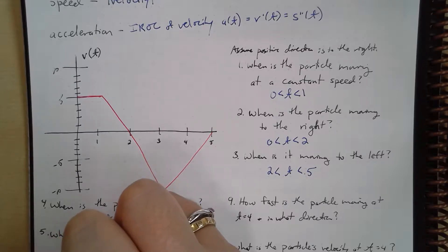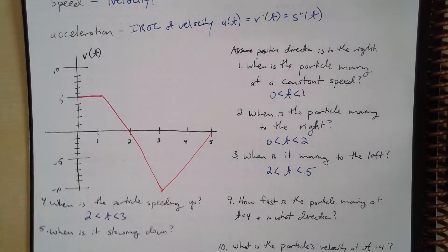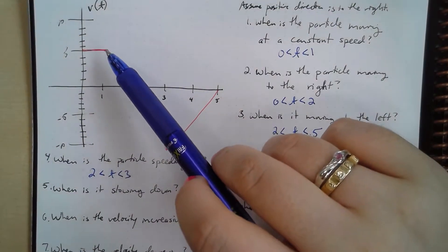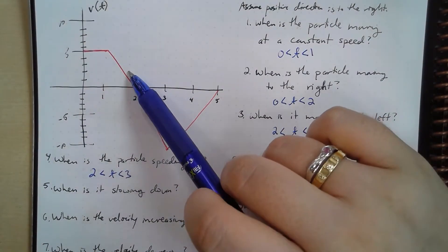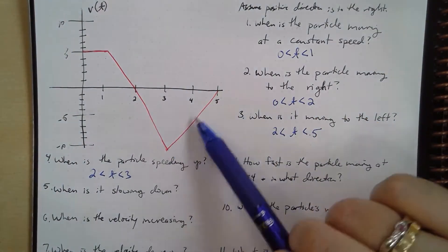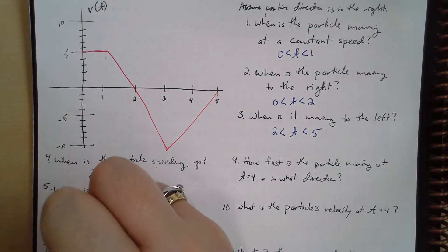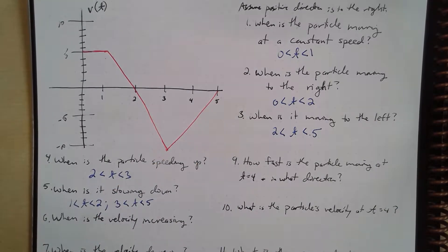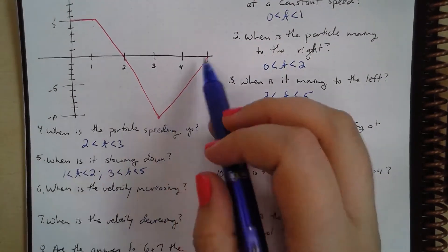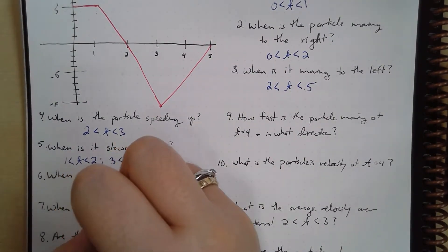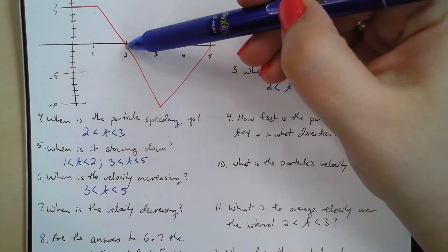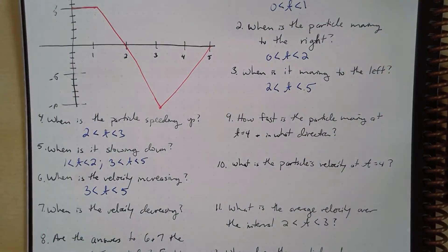When is the particle slowing down? It slows down when velocity and acceleration are in opposite directions. Here the velocity is positive but acceleration is negative, and then velocity is negative but acceleration is positive. So it's slowing down from 1 to 2, and again from 3 to 5. When is the velocity increasing? That's from 3 to 5. When is it decreasing? From 1 to 2 and from 2 to 3.